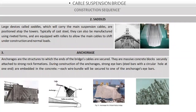Next is the saddle. The saddle is constructed at the top of the pier to support the cables. Next are the anchorages. Anchorages are the structures to which the ends of the bridge cables are secured. They are massive concrete blocks securely attached to strong rock formation. During construction, strong I-bar bundles — steel bars with a circular hole at one end — are embedded in concrete, and each wire bundle is secured to one of the anchorage I-bars.